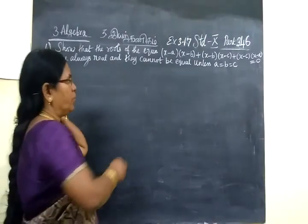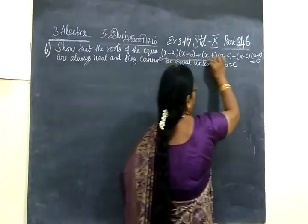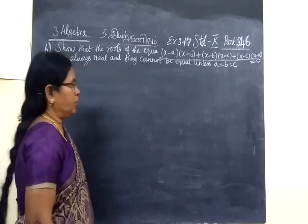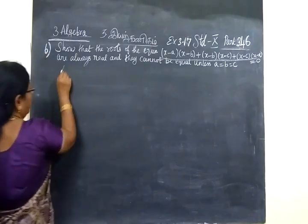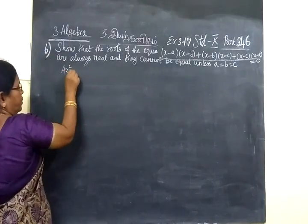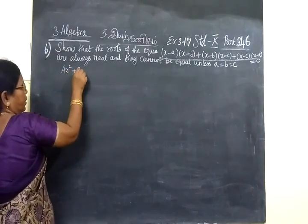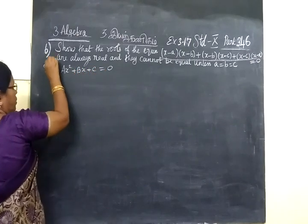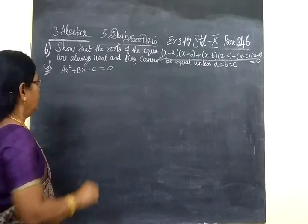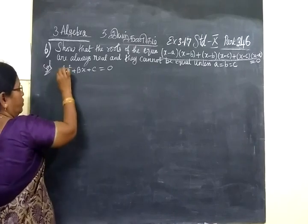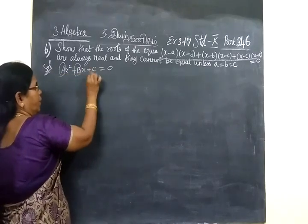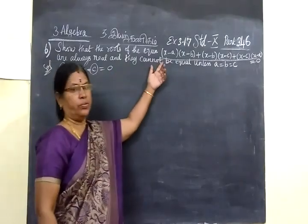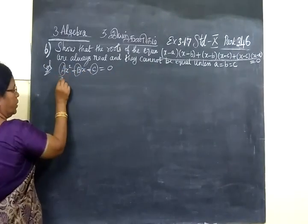First of all, we want to write it in quadratic equation form. A quadratic equation is ax² plus bx plus c equal to 0. We want to find the values of A, B, and C by expanding and rearranging the given equation.